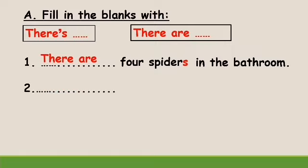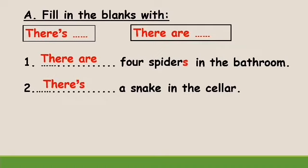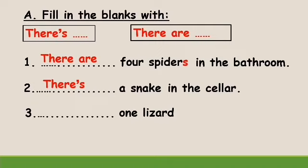Number two: a snake in the cellar. First, look at the noun — 'a snake'. Is it singular or plural? Singular nouns, right? So we need to use 'there's'. There's a snake in the cellar. Number three: one lizard in my bedroom.